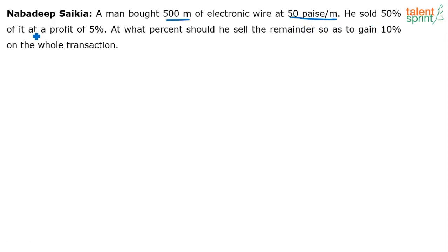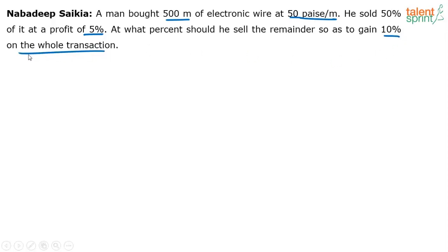He sold 50% of this 500 meters — that's half of 500 meters — at a profit of 5%. At what percent should he sell the remainder so as to gain 10% on the whole transaction? So at what percent profit should he sell the remainder, which is the other 50%, so that he gains 10% on the whole transaction?